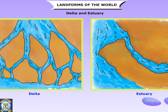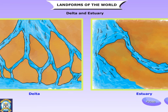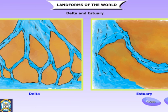Sometimes the river flows directly into the sea without dividing itself. This is called an estuary.